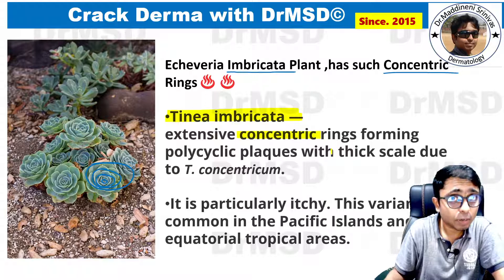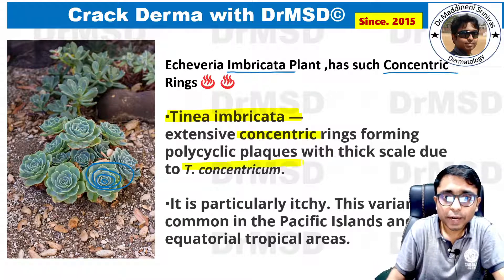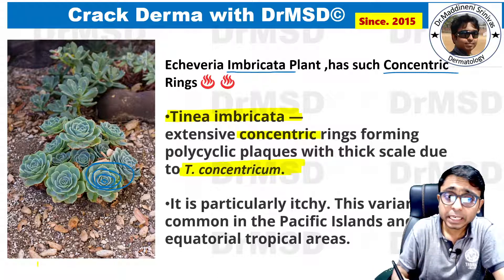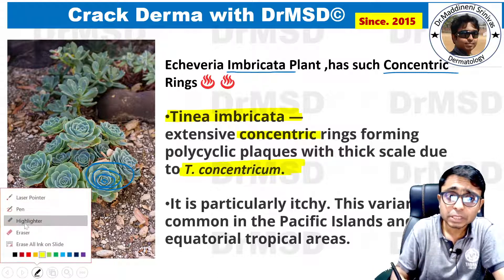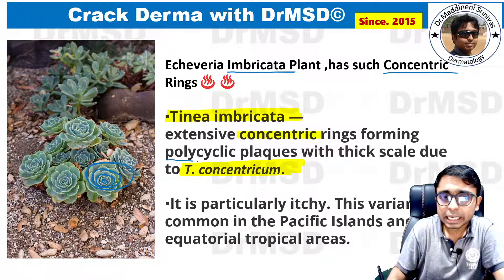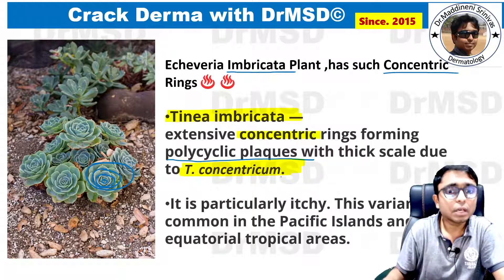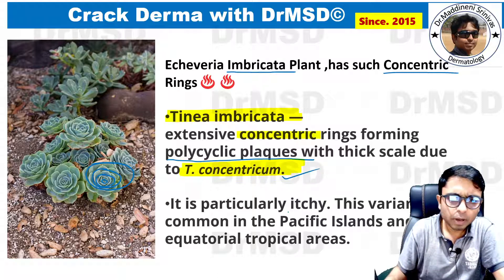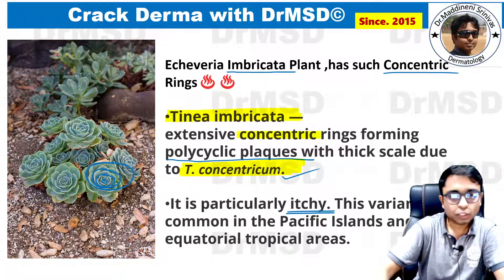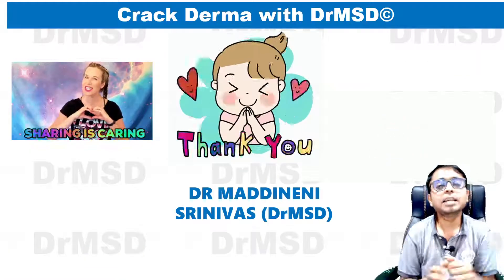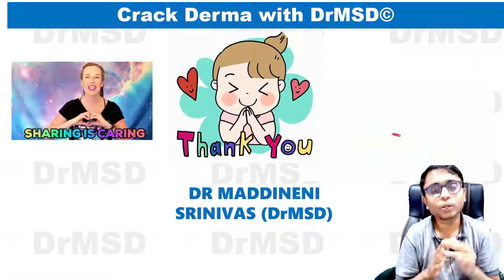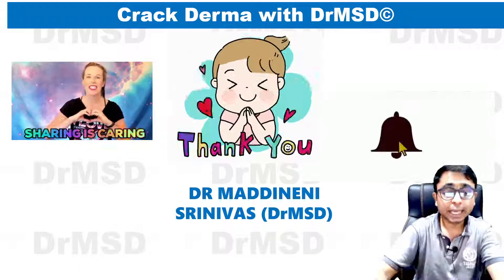The dermatophytic organism name is Trichophyton concentricum. It is going to produce these polycyclic plaques with thick scale due to this organism, and it is going to be itchy just like tinea. Thank you so much.